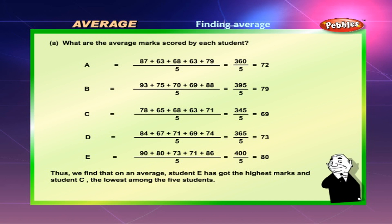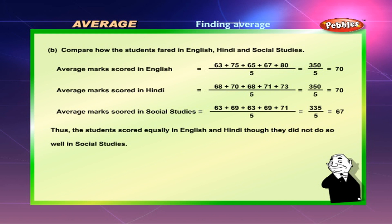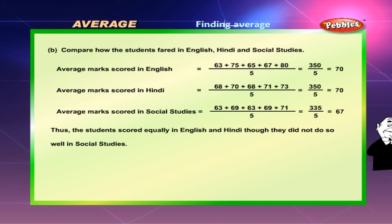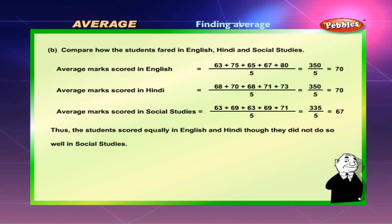Thus we find that on an average, student E has got the highest marks and student C the lowest among the five students. Now let us compare how the students fared in English, Hindi, and Social Studies. Average marks scored in English: 63 + 75 + 65 + 67 + 80 divided by 5 is equal to 350 divided by 5, which is equal to 70.